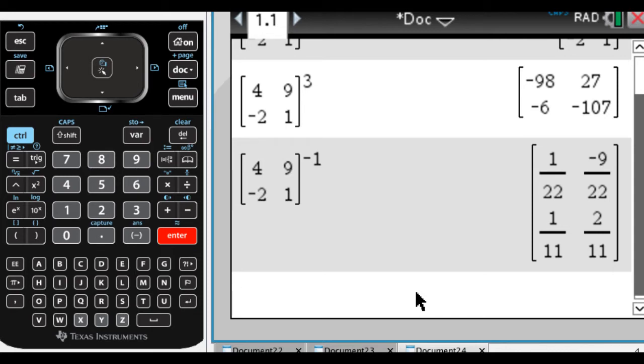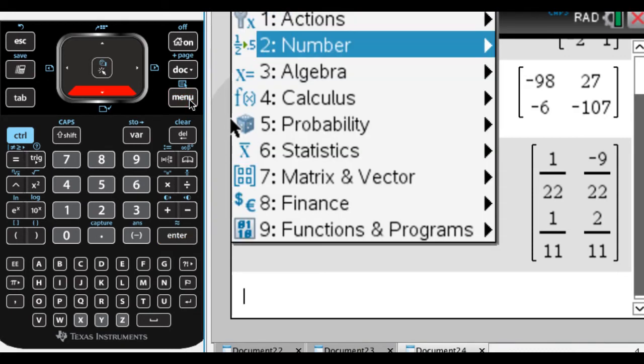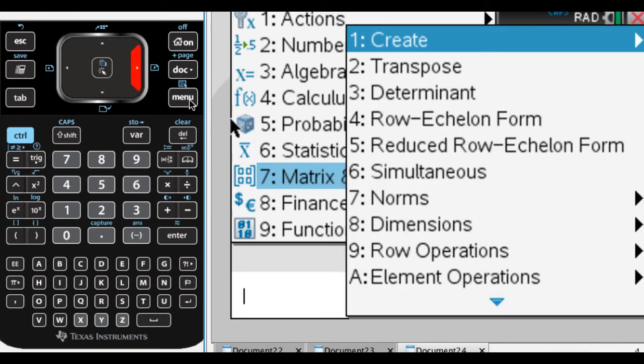That's something we can definitely do. Another thing you'll find yourself having to do quite frequently is finding the determinant of a matrix. For that, I'm going to go into the matrix menu, which is option 7. You can see we've got a lot of options here.